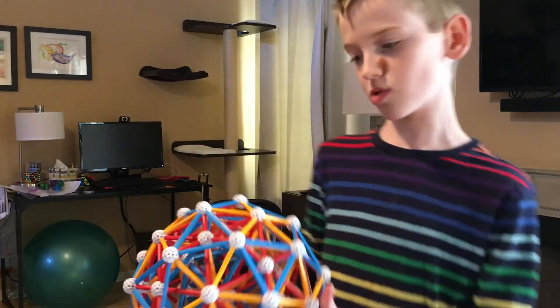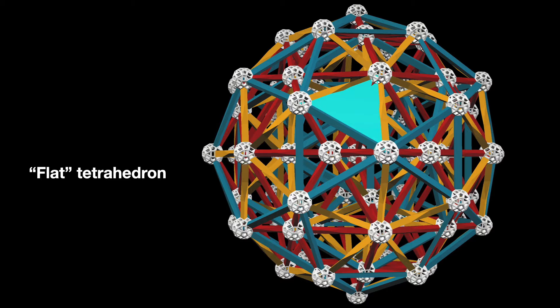For example, here, this is a flat tetrahedron on the equator: these three vertices, these three edges.